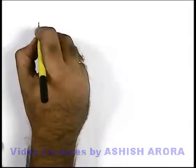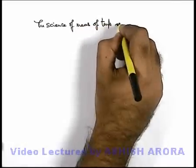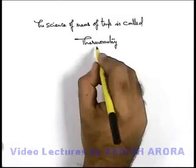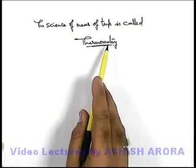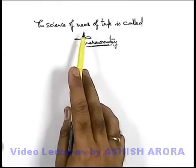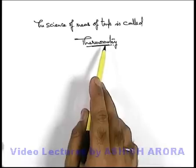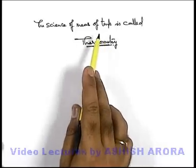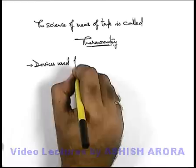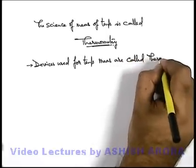Here we can state that the science of measurement of temperature is called thermometry. When we talk about thermometry, the only thing we have to study is how temperature is measured. To measure temperature of a substance, we measure some property of a substance which varies with temperature, and on the basis of that measurement we find out by some analytical relations what will be the variation in temperature. Accordingly the temperature scale is calibrated. Devices used for temperature measurement are called thermometers.